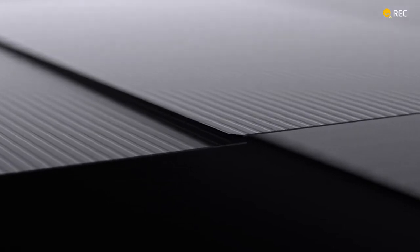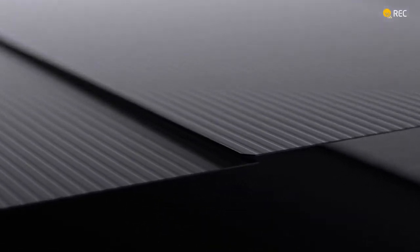Using an innovative gapless cell layout, the REC Alpha Pure makes optimum use of the entire panel surface and creates space for additional cells while keeping the panel size compact. Overlapping the cells at the cut edge ensures that light-generated carriers are not trapped, leading to higher efficiency.